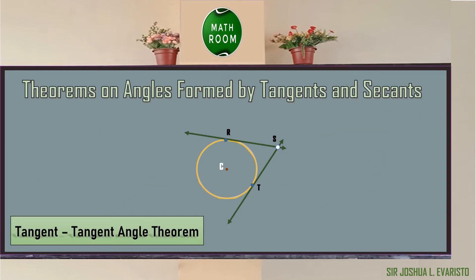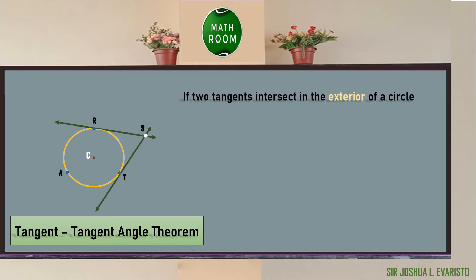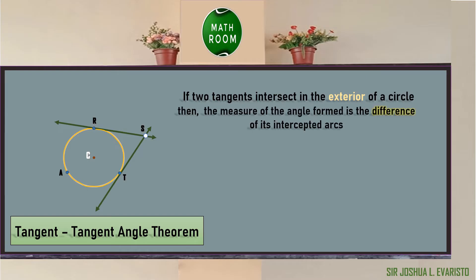The next theorem is the Tangent-Tangent Angle Theorem. This states that if two tangents intersect in the exterior of a circle, then the measure of the angle formed is one-half the difference of its intercepted arcs. In circle C, the two tangent lines are line RS and line TS, intersecting at point S outside the circle. The angle formed is angle RST, and the intercepted arcs are arc RAT and arc RT. So: angle RST = one-half of (arc RAT minus arc RT).